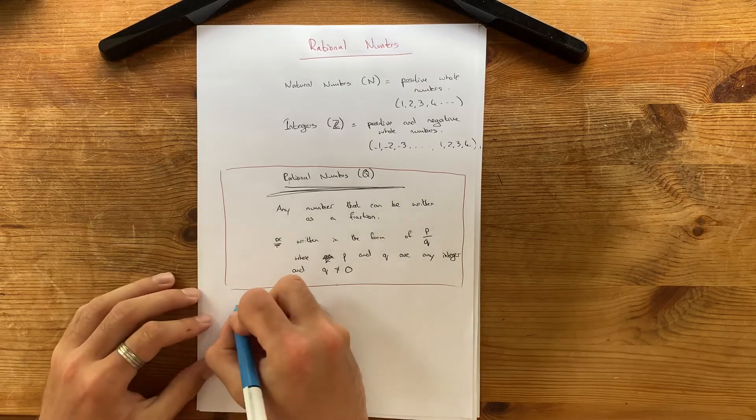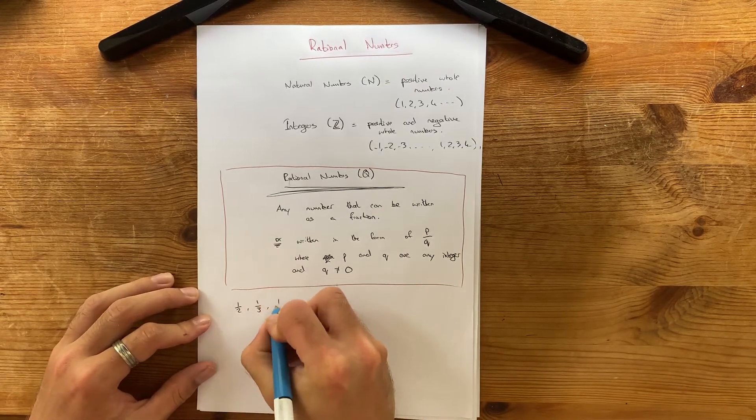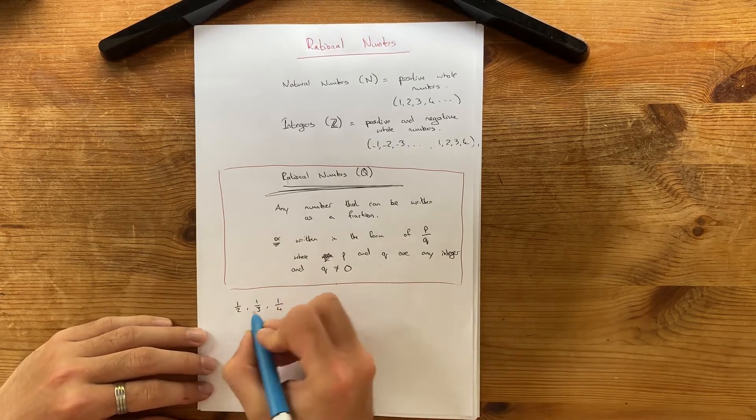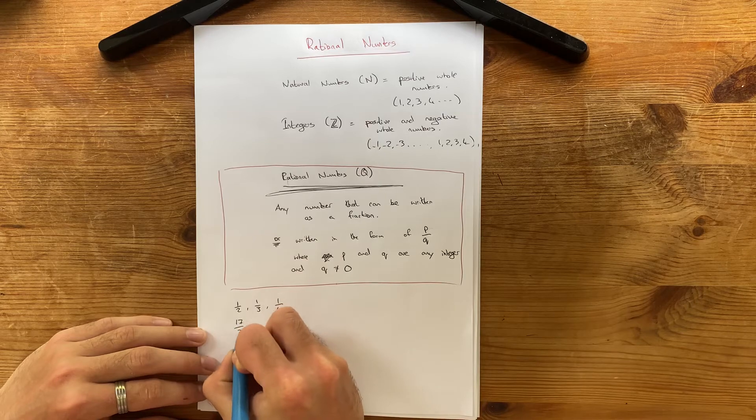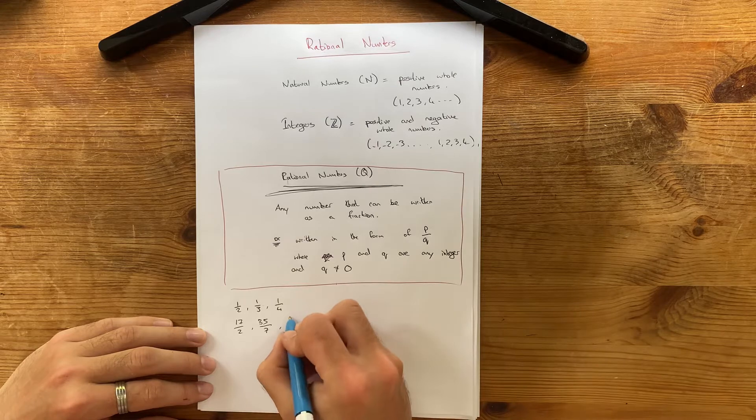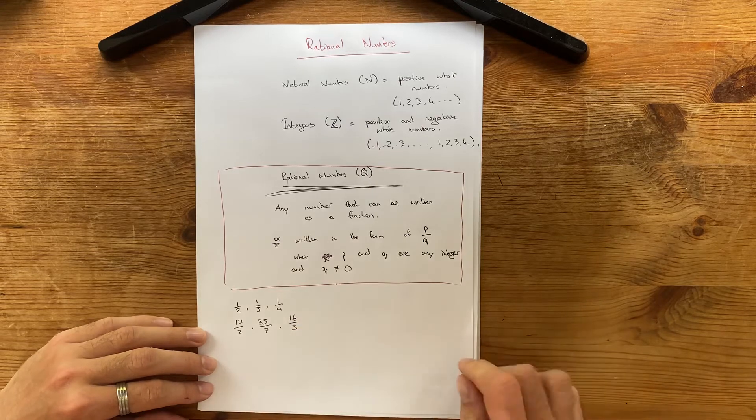So, you've got half, a third, a quarter. They're just normal ones. You can have, like, 17 over 2, 35 over 7, 16 over 3. You can have loads of them.